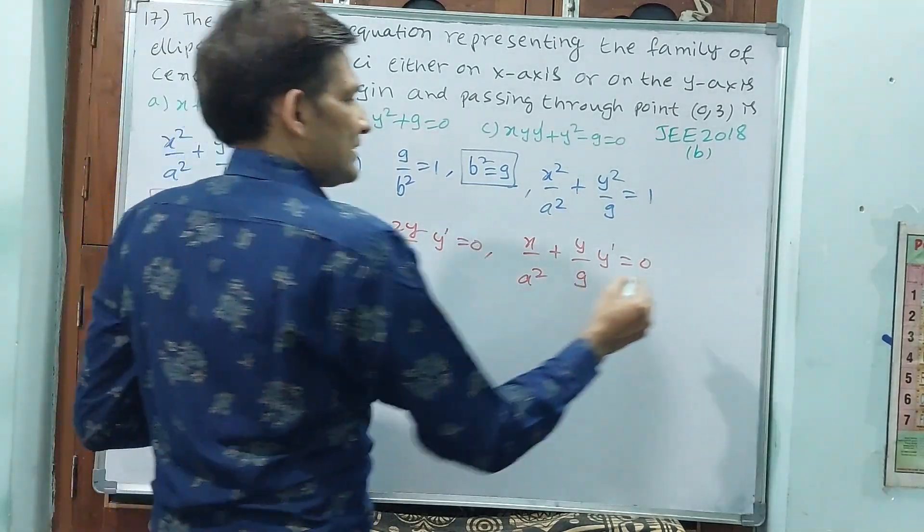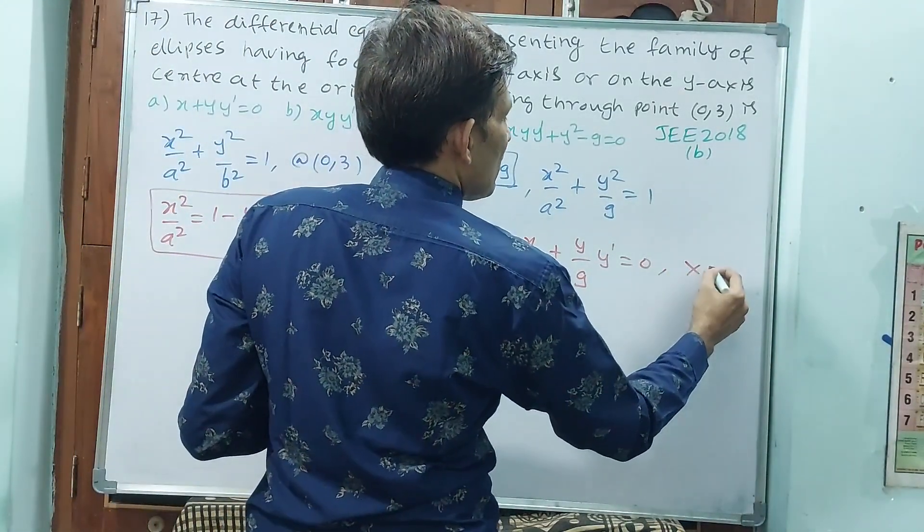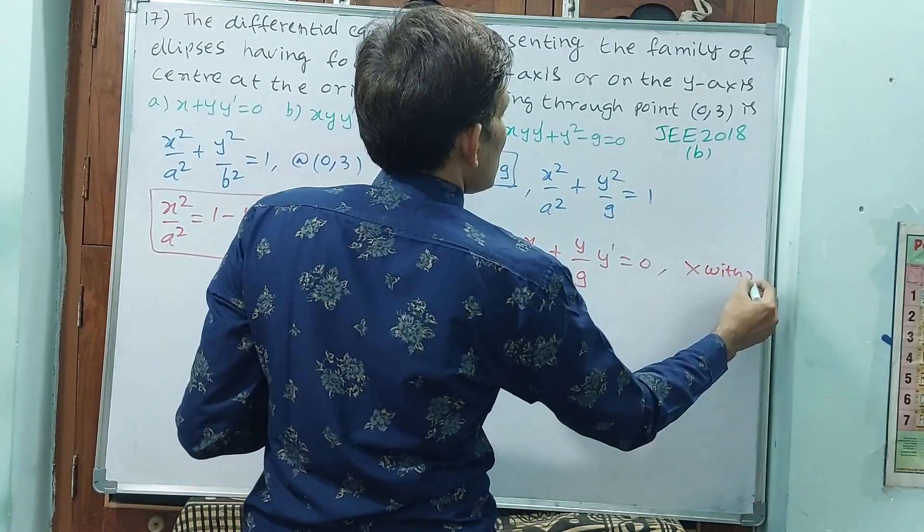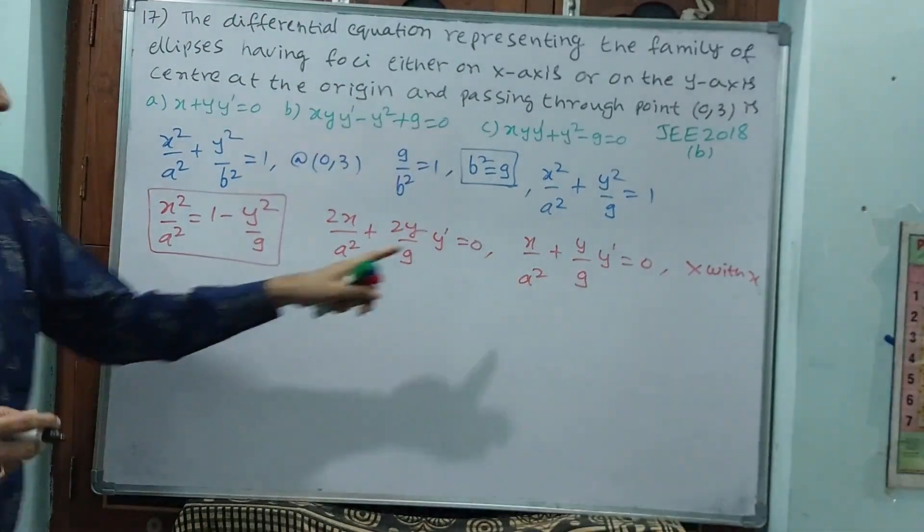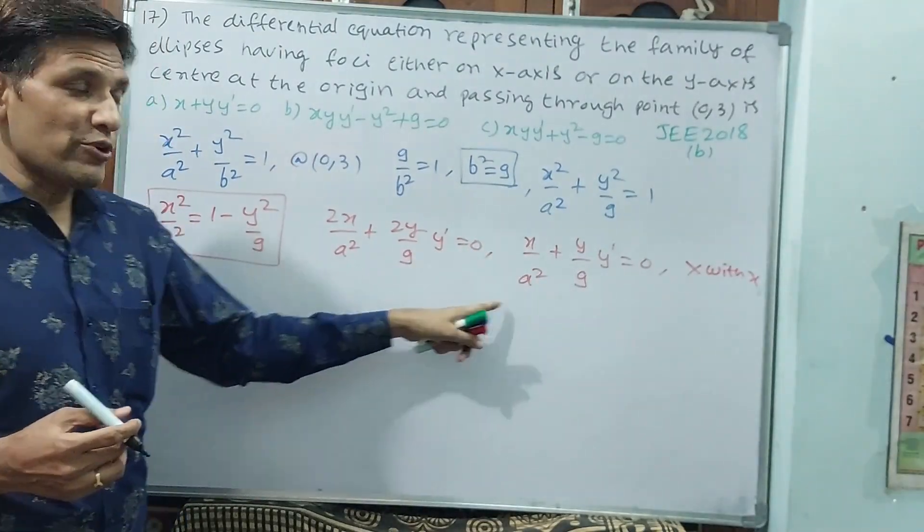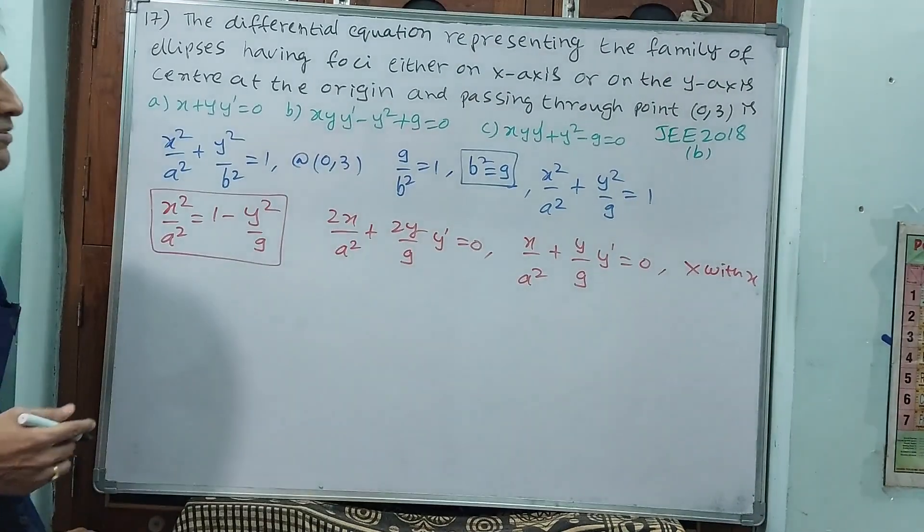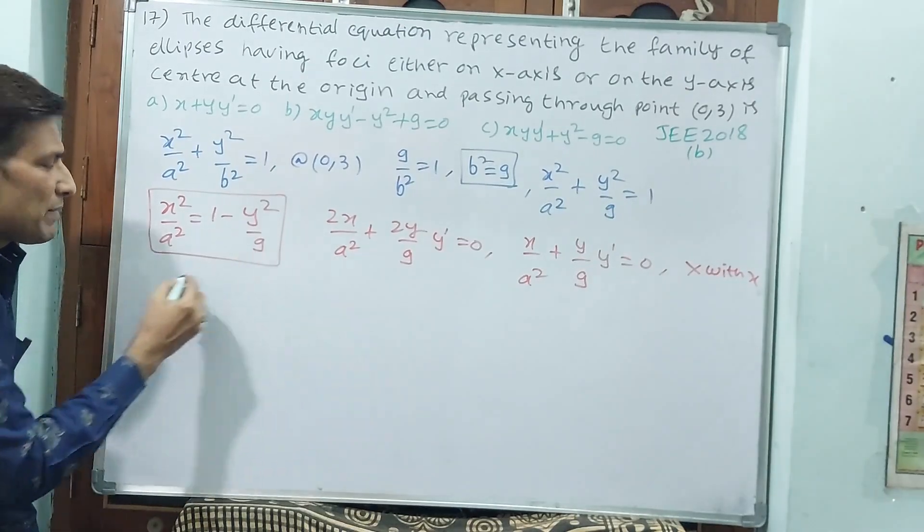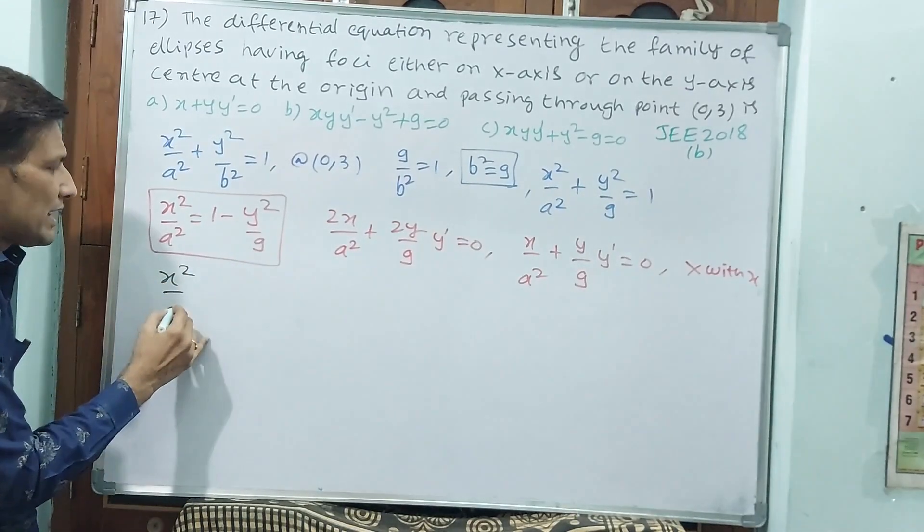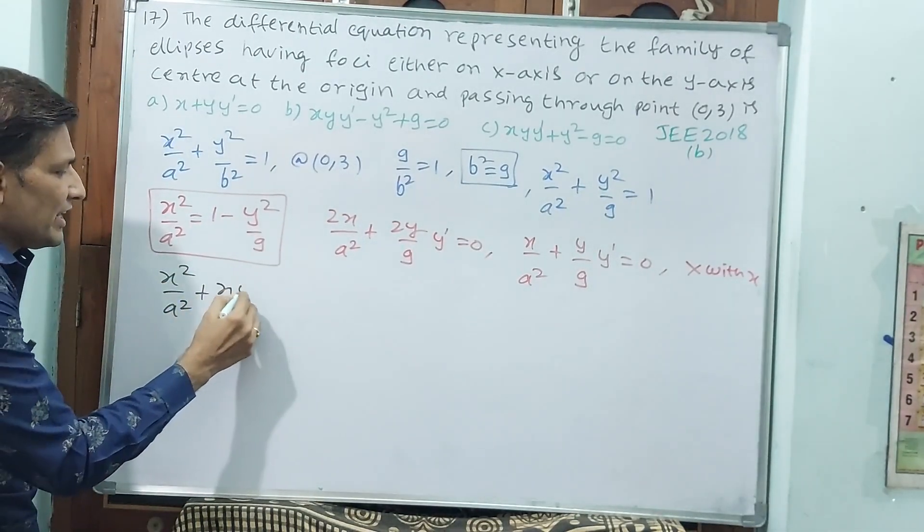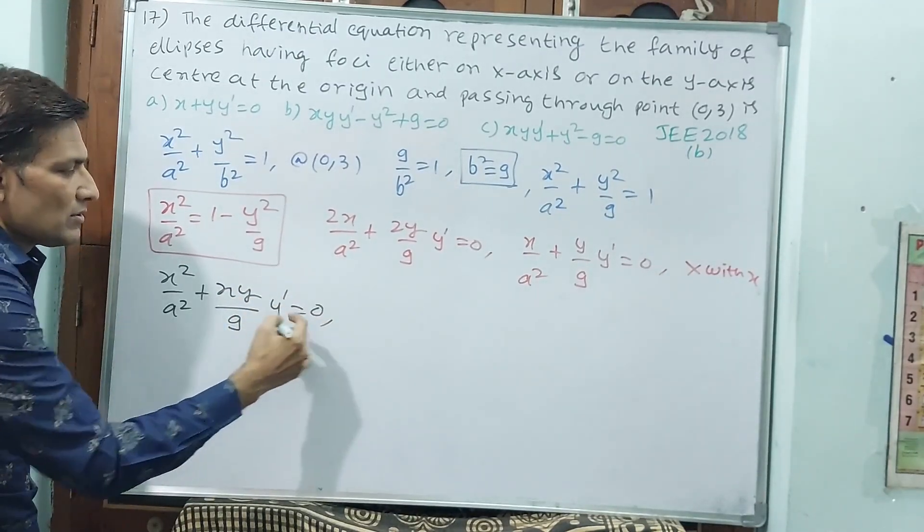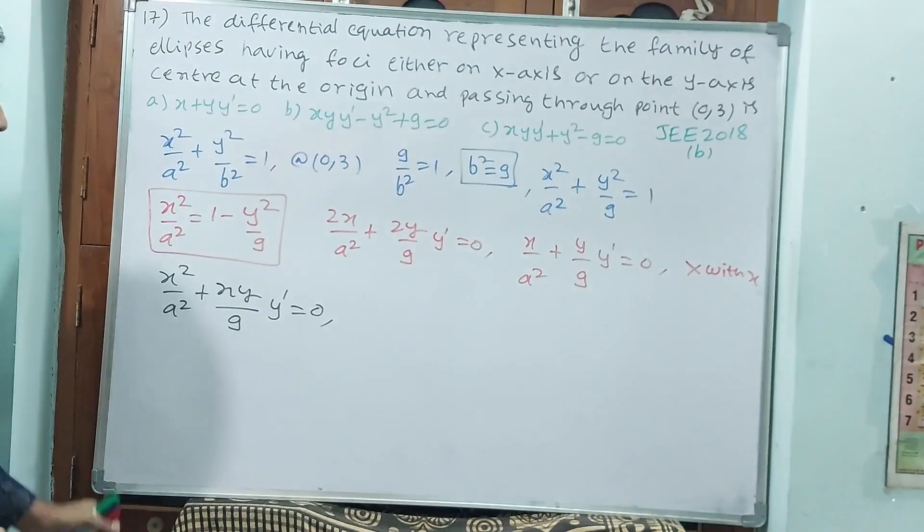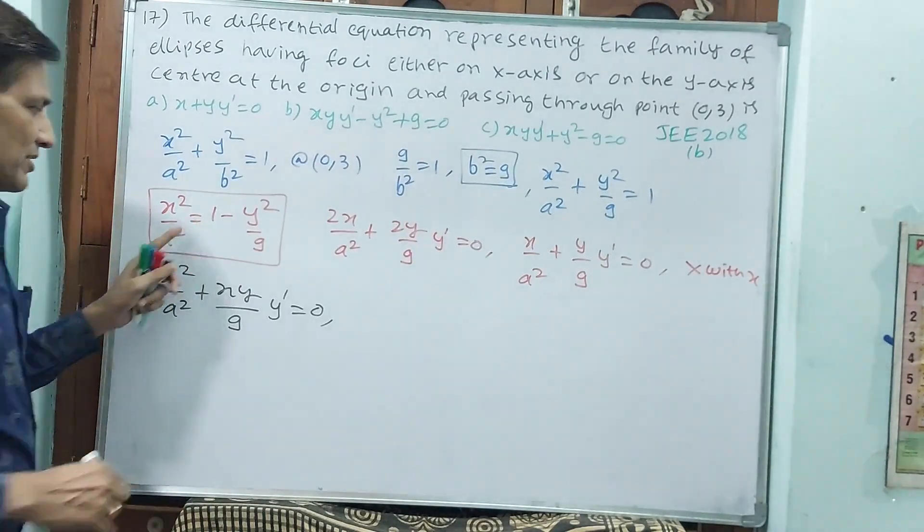Now, multiply with x. Why? Because here, if you multiply with x, x square by a square is going to happen. x square by a square value we need. That is what we are doing. If you multiply with x automatically, x square by a square plus xy by 9 y-dash is equal to 0.